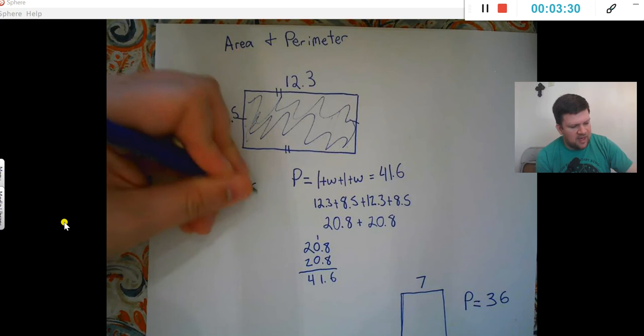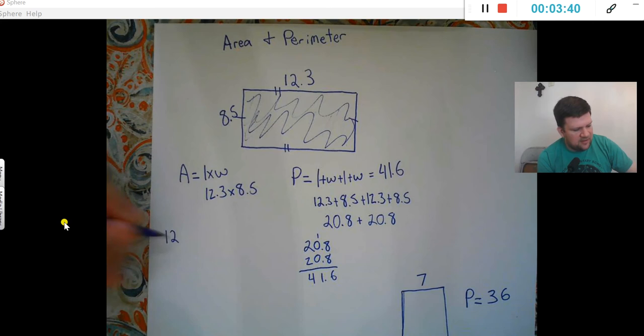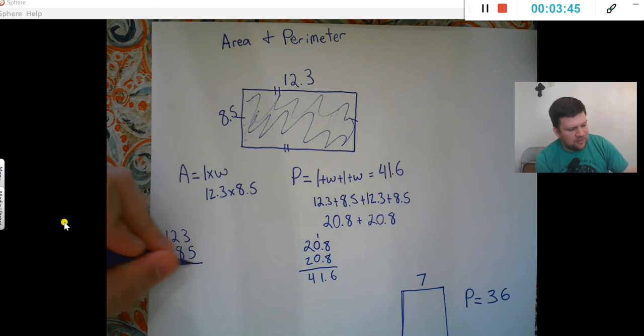For this I'm just going to multiply them together. So 12.3 times 8.5. This gives us a good review for multiplying decimals again too. Remember the way we've done it is to start out, I'm just going to do 1, 2, 3 times 8.5. So multiplying it just like they're whole numbers.